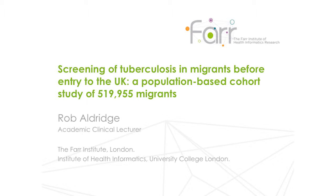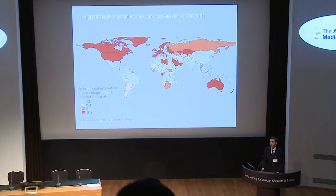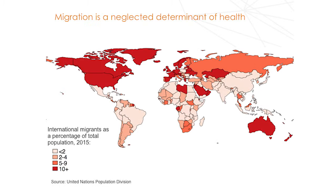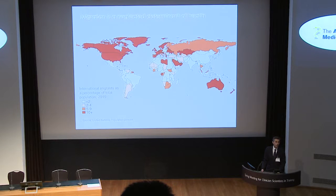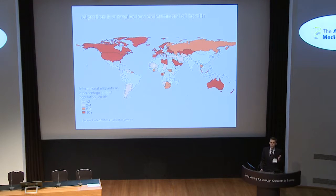This map of the world shows that there are 45 countries that have over 10% of their population made up of individuals not born in that country. The UN estimates that there are over 244 million people around the world living in countries they weren't born in. Here in the UK, it's one in eight of the population, which means that in this room there are probably 30 of you that weren't born in the UK.